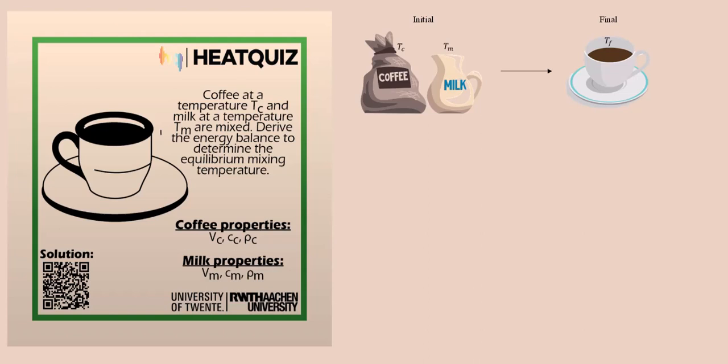Since no heat is being added to the system, and since no work is being done, it is just the mixing that takes place. So the energy balance would be equal to the initial enthalpy of the system that is equal to the final enthalpy of the system.